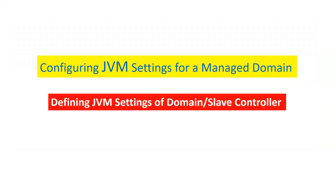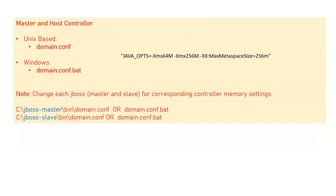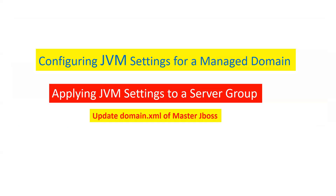In a managed domain, to update the JVM size for your domain controller and slave host controllers, there is a file called domain.conf for Unix-based systems and domain.conf.bat for Windows. You just need to update the JVM_OPTS parameter defined in domain.conf or domain.conf.bat, and it will reflect the new JVM heap size for both your domain controller and your slave host controllers.